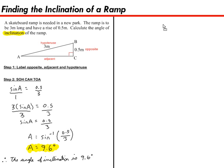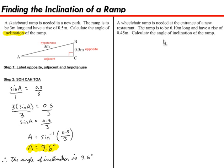Why don't you give it a try? How about you build a ramp for a restaurant? A wheelchair ramp is needed at the entrance of a new restaurant. The ramp is to be 6.10 meters long and have a rise of 0.45 meters. Calculate the angle of inclination of the ramp. They've been nice in giving you a diagram. Go ahead and try to find the angle of inclination using the steps I showed you.